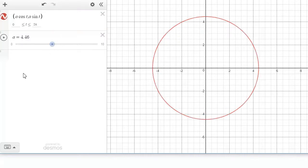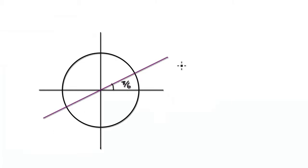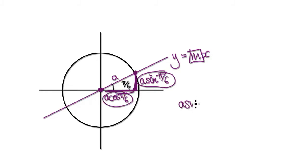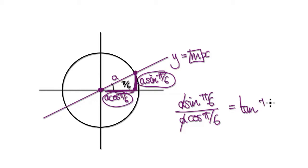Now let's draw our line. Any straight line is of the form y = mx + c. You can see the intercept is 0, so c disappears. Now it's just a matter of working out the gradient. We have a circle of radius a, so the height is a·sin(π/6) and the horizontal distance is a·cos(π/6). The gradient is height divided by horizontal, which is a·sin(π/6) / a·cos(π/6) — also known as tan(π/6).